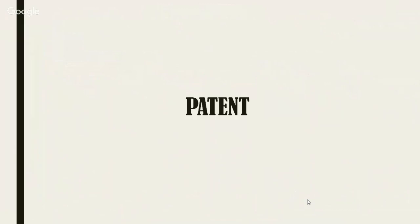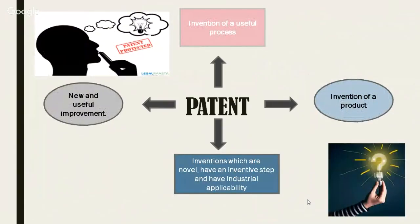A patent is a form of right granted by the government to an inventor or owner. It is an exclusive right that excludes others from making, using, selling, offering to sell, or importing the invention for a limited period of time — in the case of patents, 20 years from the date of filing. It is like a negative right because it gives a monopoly to an inventor over the market.